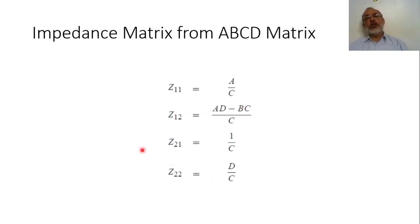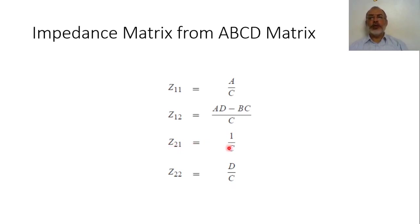If we are interested in obtaining the impedance matrix from the ABCD matrix: Z11 = A/C, Z12 = (AD − BC)/C, and Z21 = 1/C. It should be noted that if the network is reciprocal, Z12 equals Z21, because AD − BC = 1 for a reciprocal network. And finally, Z22 = D/C.